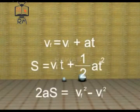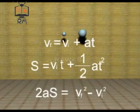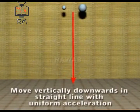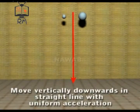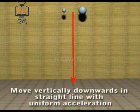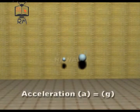All three equations of motion can be used for bodies which are falling freely under the action of gravity. It is because bodies move vertically downward in straight lines with uniform acceleration. In such cases, we replace a by g.